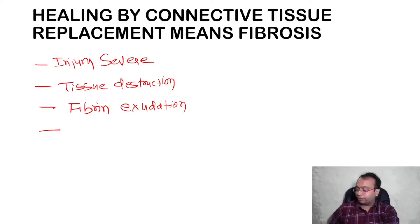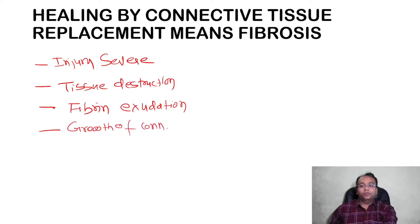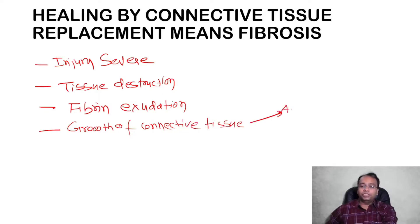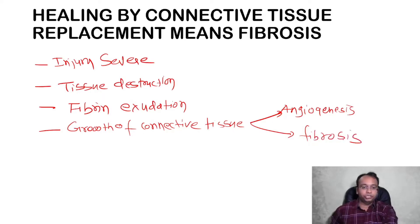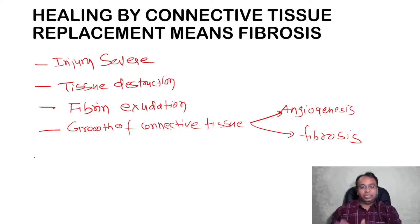There will be growth of connective tissue, usually in the form of angiogenesis and fibrosis. Together they are known by the name granulation tissue. So there will be granulation tissue formation, similar to that seen in chronic inflammation. This is seen when tissue destruction is present.